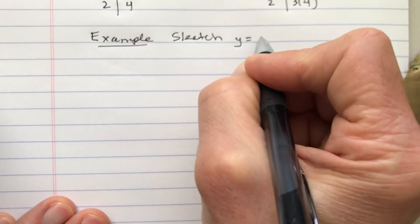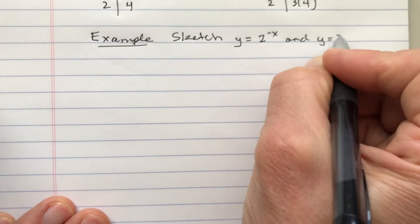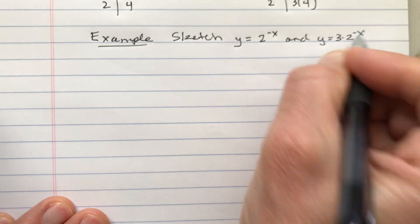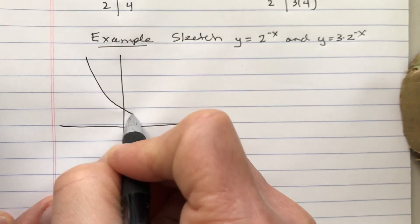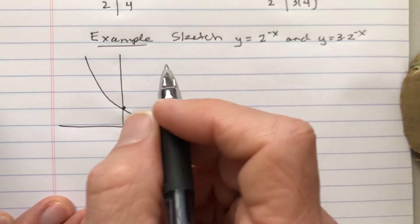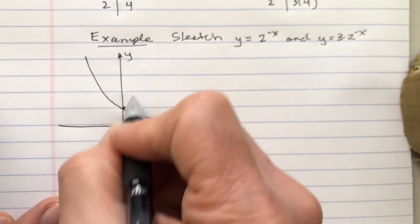So here we'll sketch y equals 2 to the minus x and 3 times 2 to the minus x. 2 to the minus x looks a lot like 2 to the x, except it's a reflection around the y-axis. It's decreasing.